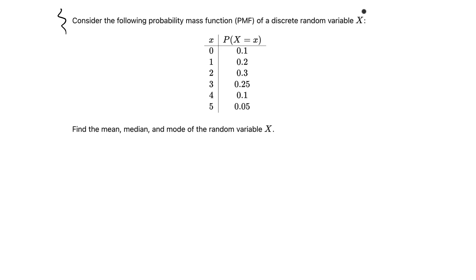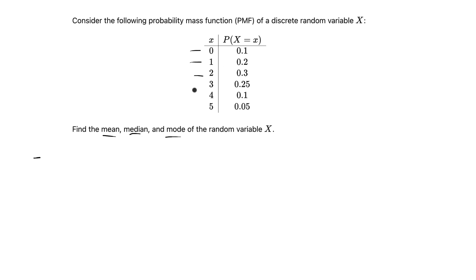Hey everyone, in this video I'm going to do a statistics and probability problem. It says: consider the following probability mass function, or PMF, of a discrete random variable x. We're given the probability distribution as a table and we're asked to find the mean, median, and mode of x. Since we're dealing with a discrete random variable, the values of x take on discrete values and the probability distribution is presented as a PMF — a table with all possible probabilities for each possible value of x.